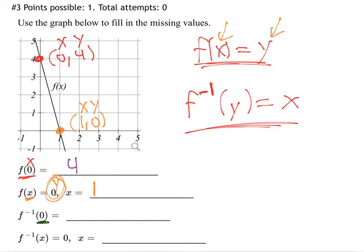f inverse of 0: is that 0 an x value or a y value? It's a y because we put y values into inverse functions. So this is a y value of 0. Look at the graph and find the point with a y value of 0 — that's this point. The x that goes with it is 1. That's what inverse functions do: you plug in y and what it equals is x.